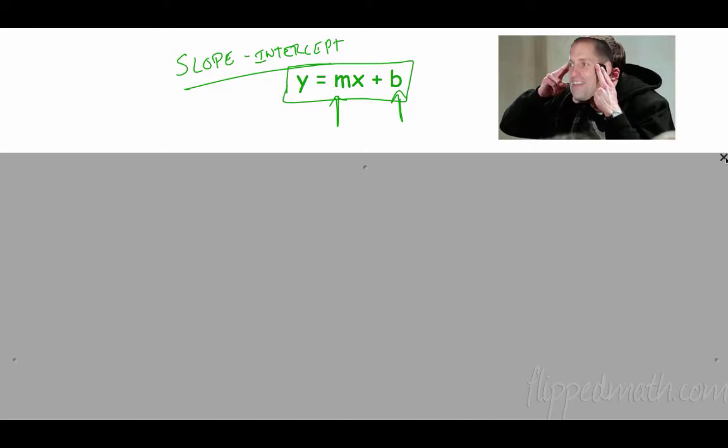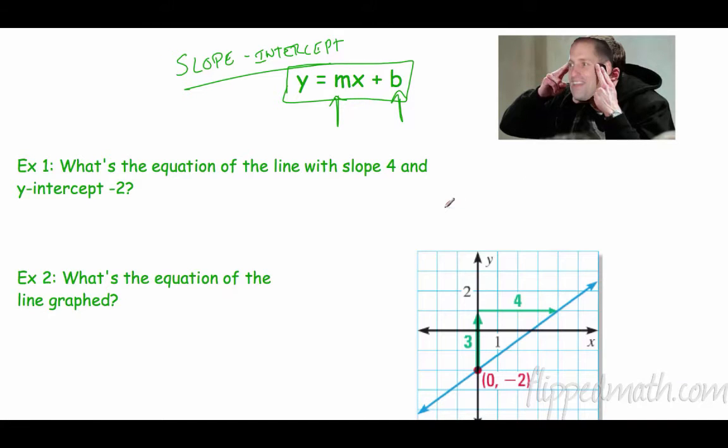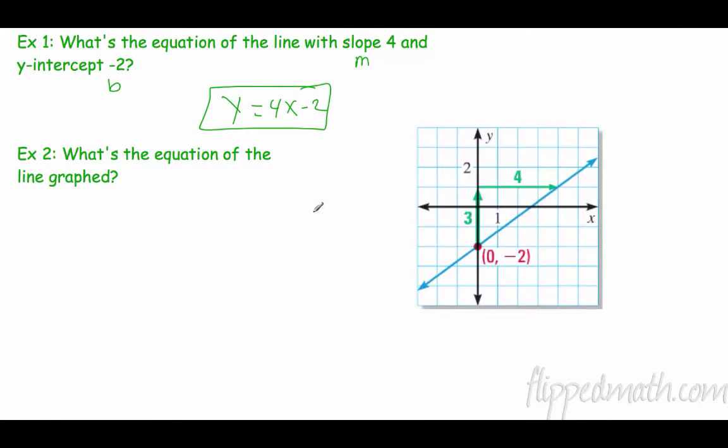That's fine, you can do that, but if it's not in slope-intercept form, even if it doesn't say it explicitly, it means put it in a slope-intercept form. Alright, so when we do this in slope-intercept form, we're always looking for two things. A slope and an intercept. So let's start easy. Easy peasy, lemon squeezy, I can't make it any easier than that.